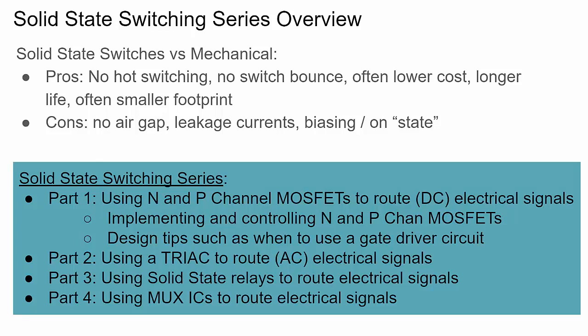The drawbacks to solid-state versus mechanical is there is no air gap. With mechanical relays you get air between your signal paths, and a lot of industries like that for safety reasons. Related to that, solid-state devices often have leakage currents because you don't have that air gap — there is a small amount of current flow, but it'll be very minimal. Biasing to an on or off-state can also be a little more complex.